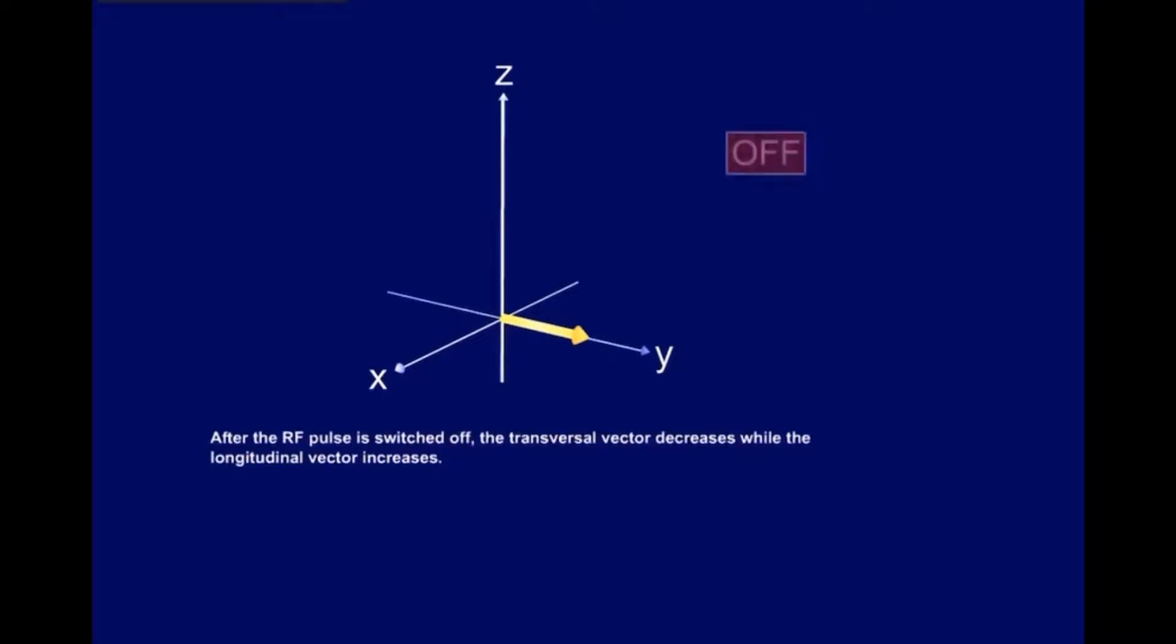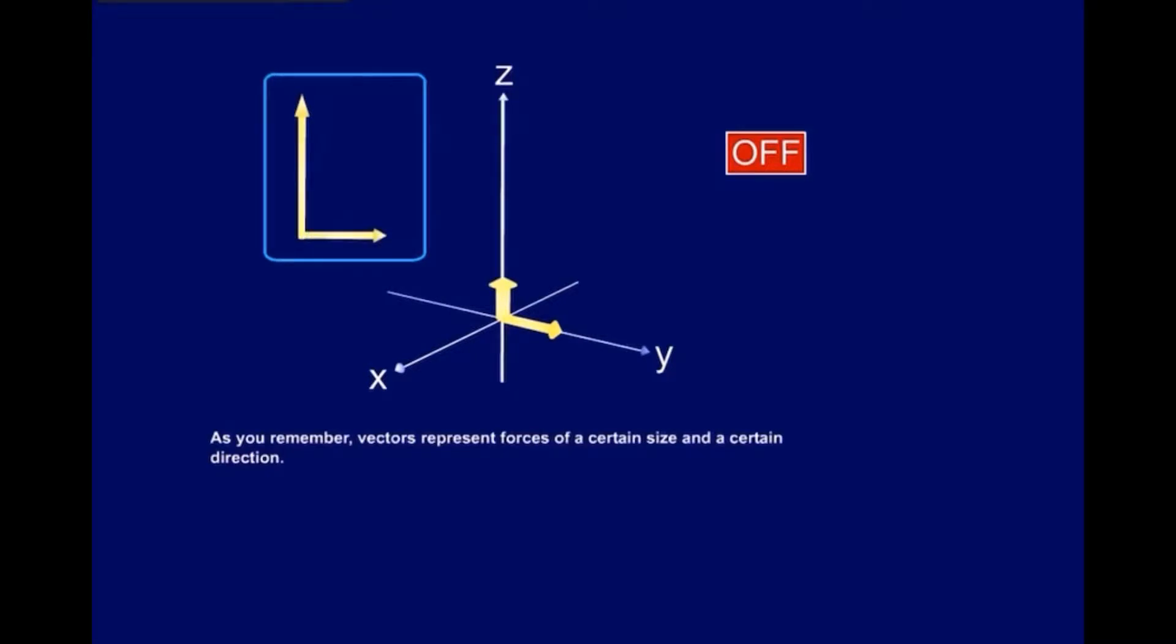After the RF pulse is switched off, the transversal vector decreases, while the longitudinal vector increases. As you remember, vectors represent forces of a certain size and a certain direction. If you add up vectors pointing to different directions, you will come up with a direction that is somewhere in between, depending on the amount of force in the original directions.